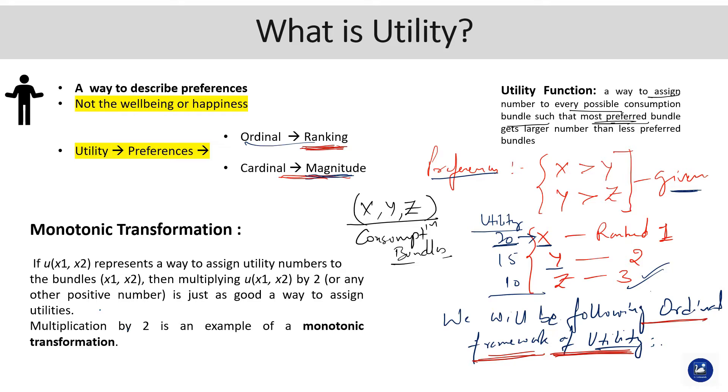In the example, our most preferred bundle was X - X is preferred over Y is preferred over Z. So X gets a greater number than less preferred bundles. In case of three bundles, the same should hold simultaneously. X should be accorded a greater value or rank than Y, and Y should be higher than Z. This is how it works.